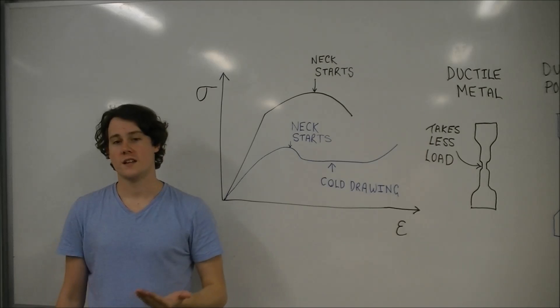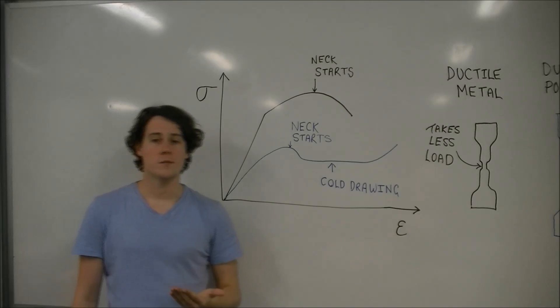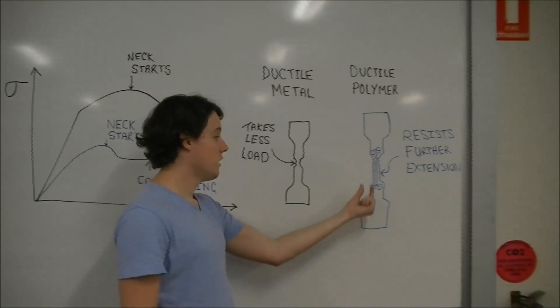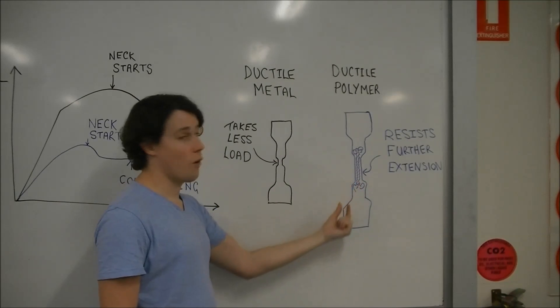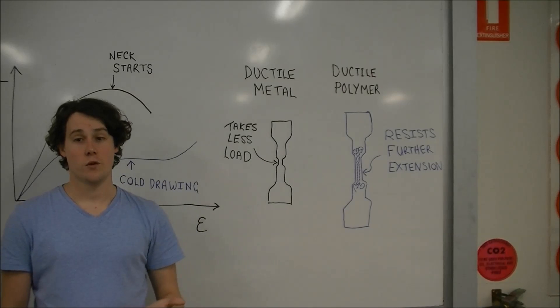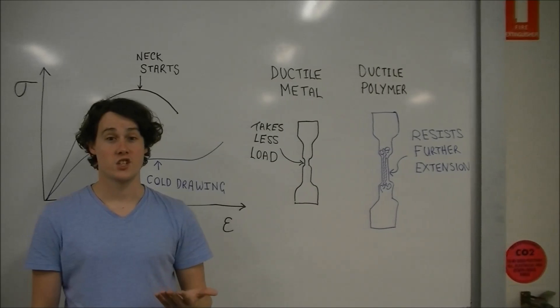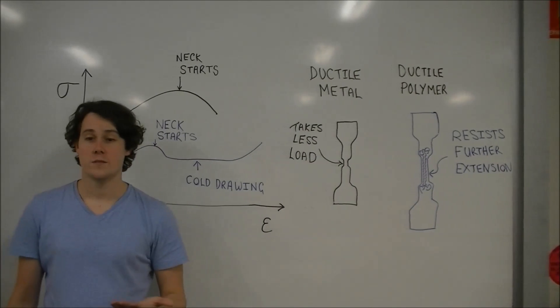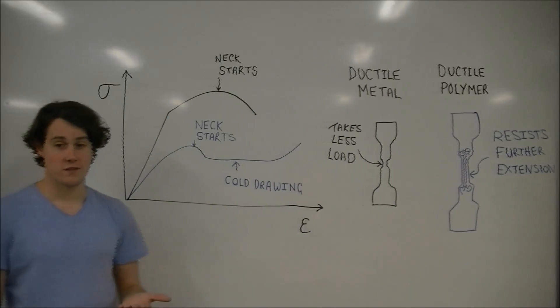During necking in a ductile polymer, the polymer chains within that region begin to unravel and align in the direction of the applied load. Chains also move closer together, therefore the van der Waals forces between the chains increase.